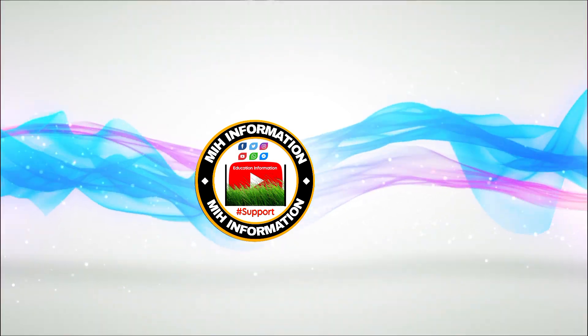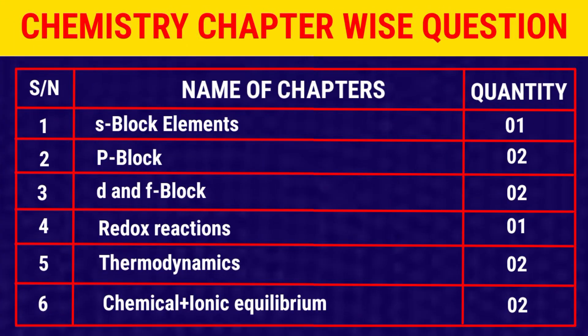The chapters we will cover are: S-block elements, P-block elements, D and F-block elements, Redox reactions, Thermodynamics, and Chemical equilibrium and Ionic equilibrium. We are going to discuss two questions from each. This is the overview of the chapters, and we are going to talk about some questions.